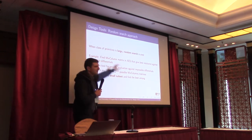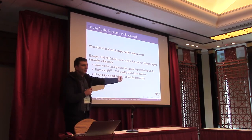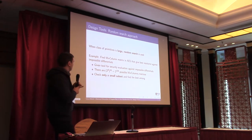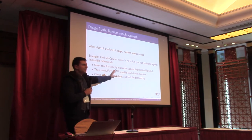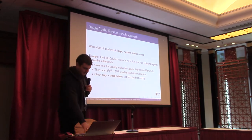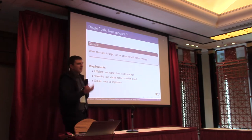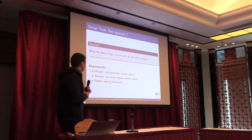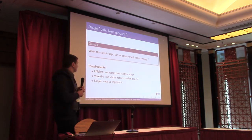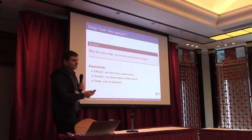When the class of primitives is large, we use random search. For example, if you want to find a better MixColumns matrix in AES with better resistance against impossible differential attacks — and such a tool exists — there are many possible matrices, so we pick a small subset and find the best among them. The question we are trying to answer is: when the class is large, can we come up with a better strategy than random search? This strategy must be efficient, versatile, and simple — otherwise people won't use it.